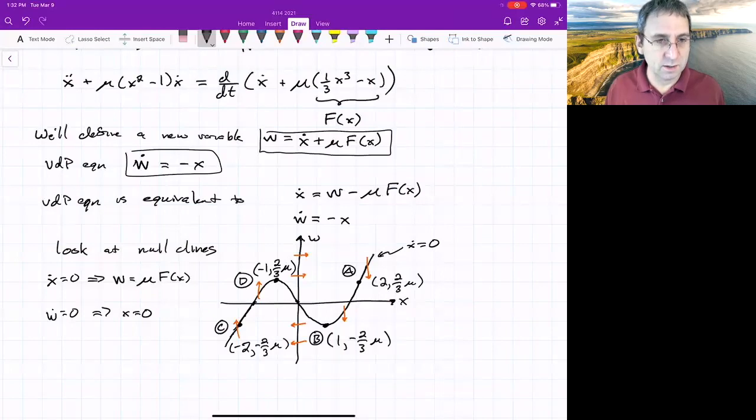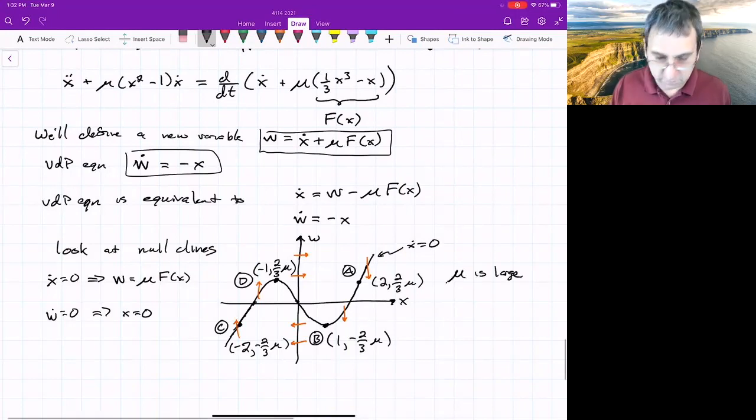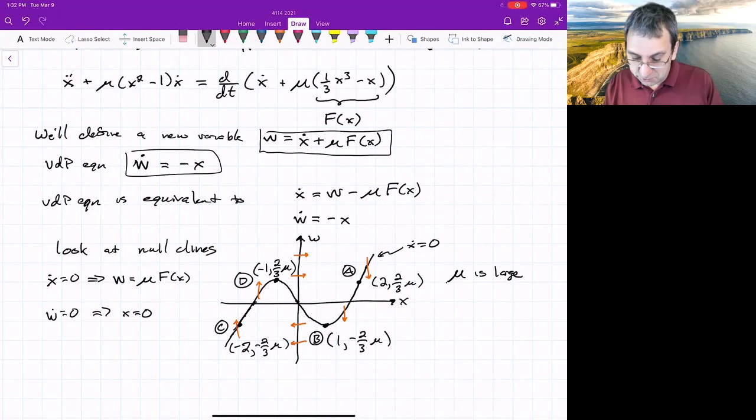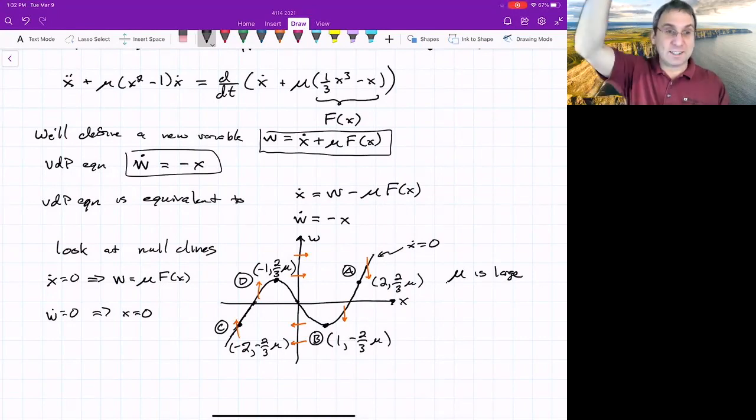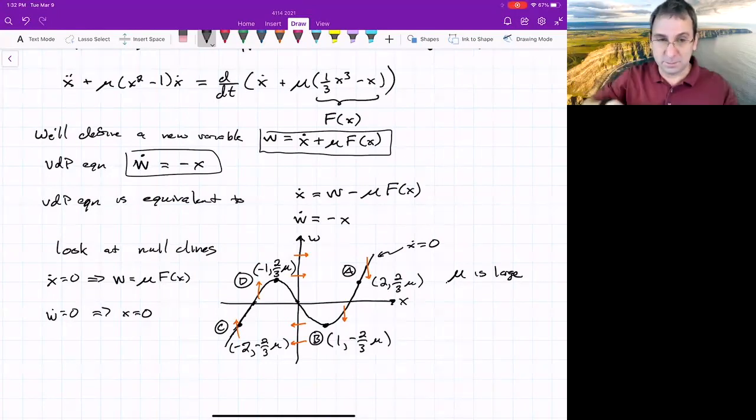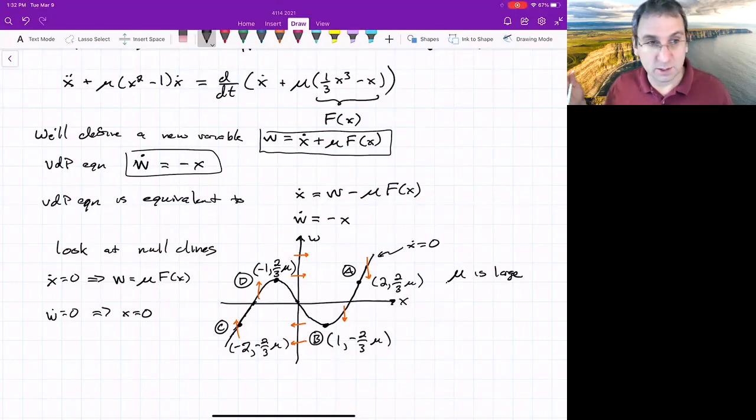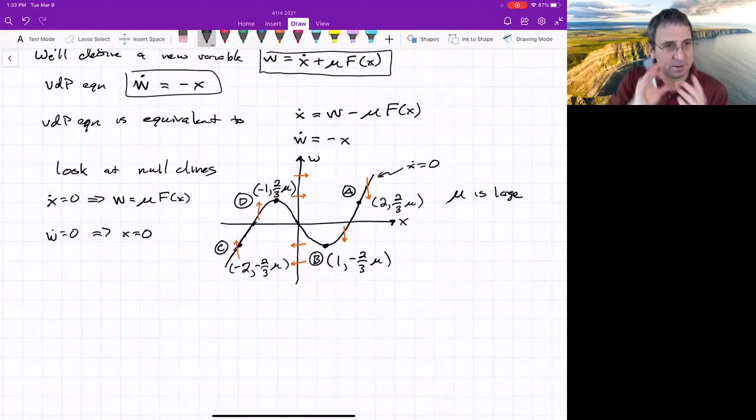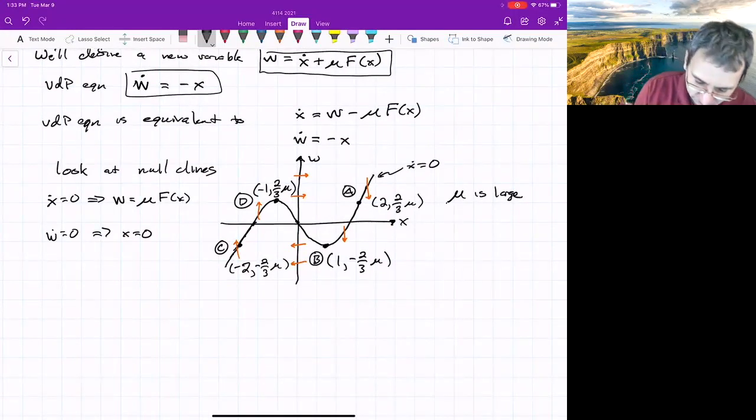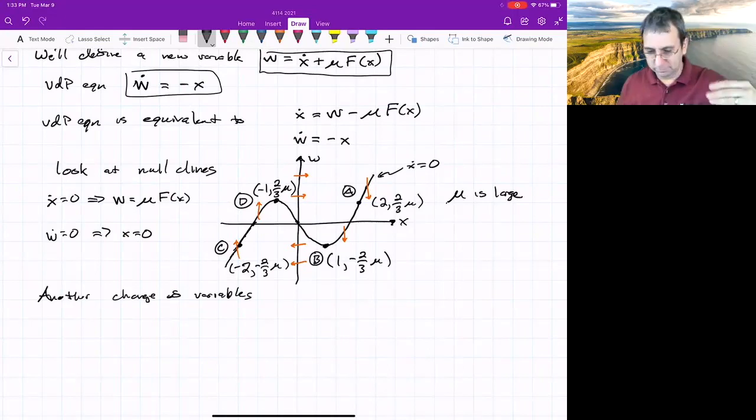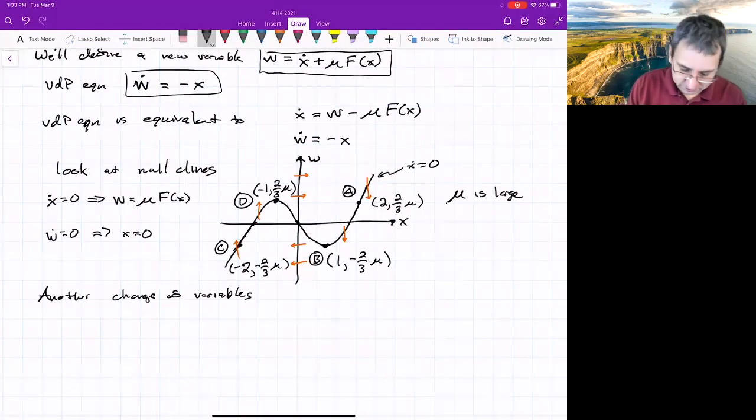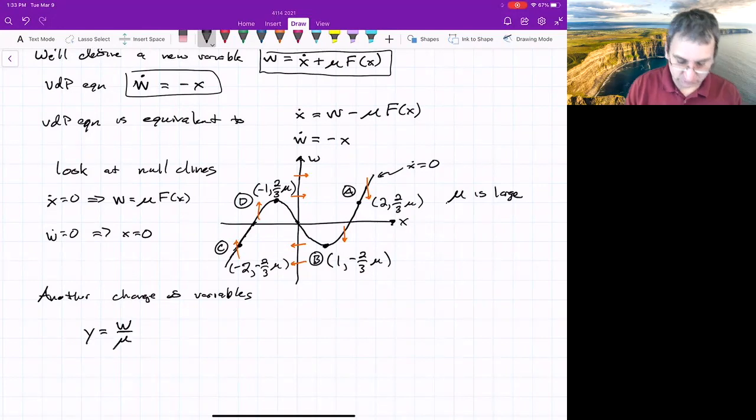And something that you can notice about this is, remember mu is large. Mu is large. Very, very large, much, much greater than one. Which means things are not to scale the way that I've plotted them here. In the x-axis, interesting things are happening between negative two and two. But since mu is very large, the w-axis is stretched out. These things are at 22 thirds of a billion and negative two thirds of a billion. So this sort of suggests we should do another change of variables so that we have things in more or less equal proportions. So another change of variables, we basically want to reduce the size of the w direction. So we will write things this way, w divided by mu, and that should take care of it.